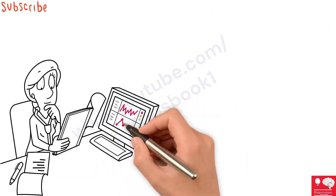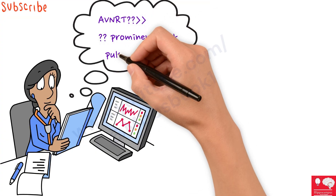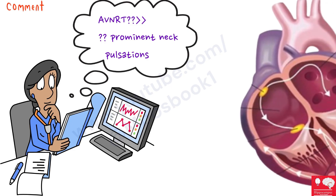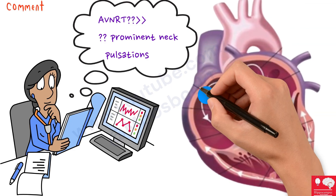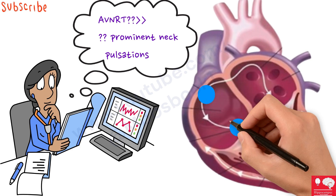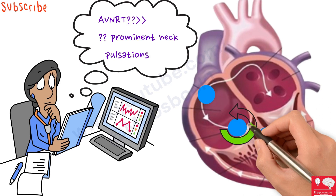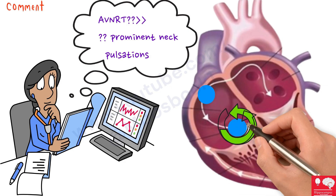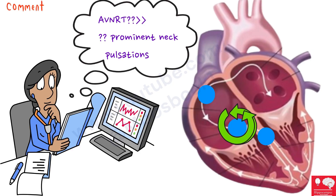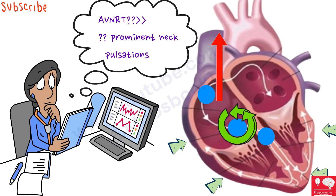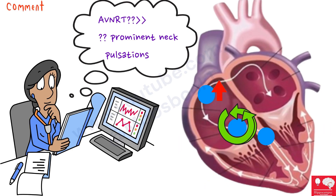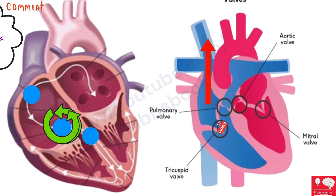So why was this AV nodal reentrant tachycardia contributing to the development of these prominent neck pulsations? In this diagram, you can see the three blue dots — the SA node, the AV node, and the bundle of His — and the green shows a reentry circuit. In patients with paroxysmal supraventricular tachycardia, this reentry current causes a simultaneous contraction of the atria and ventricles against closed mitral and tricuspid valves, causing reflux of blood into the neck veins. The tricuspid valve is closed, and the force causes the jugular venous column to skyrocket, contributing to a super large A wave called the cannon A wave.